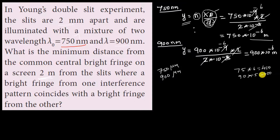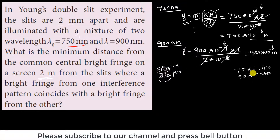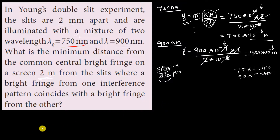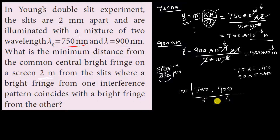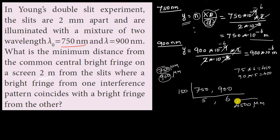Now we find the LCM of the two fringe widths — 750 micrometers and 900 micrometers. The common factors give LCM as 5 times 6 times 150, which equals 4500 micrometers. This means the 5th bright fringe of one pattern coincides with the 6th bright fringe of the other at 4500 micrometers. So the answer is 4500 micrometers.